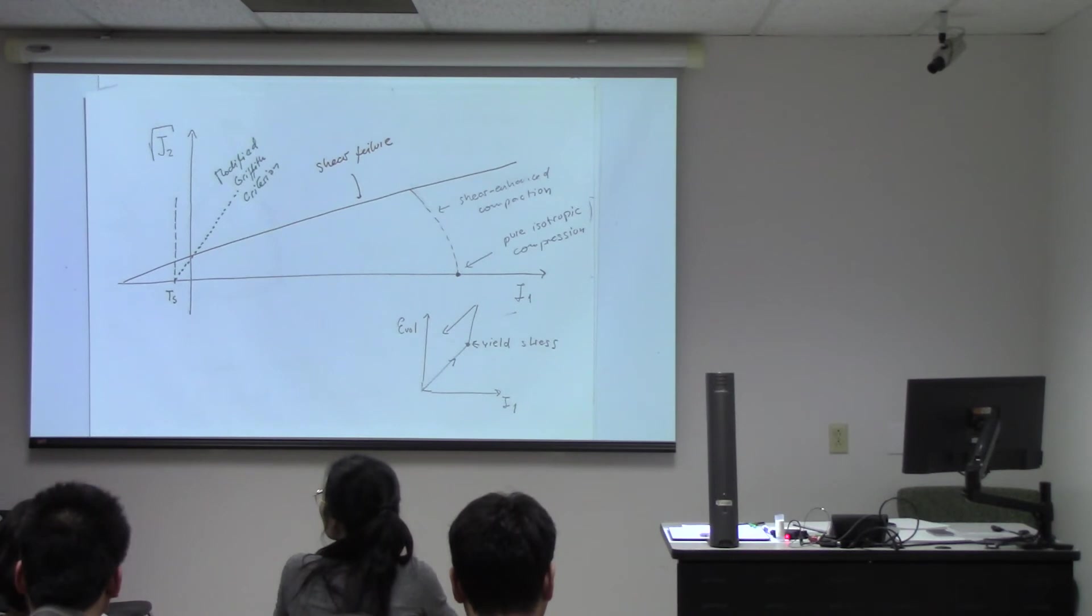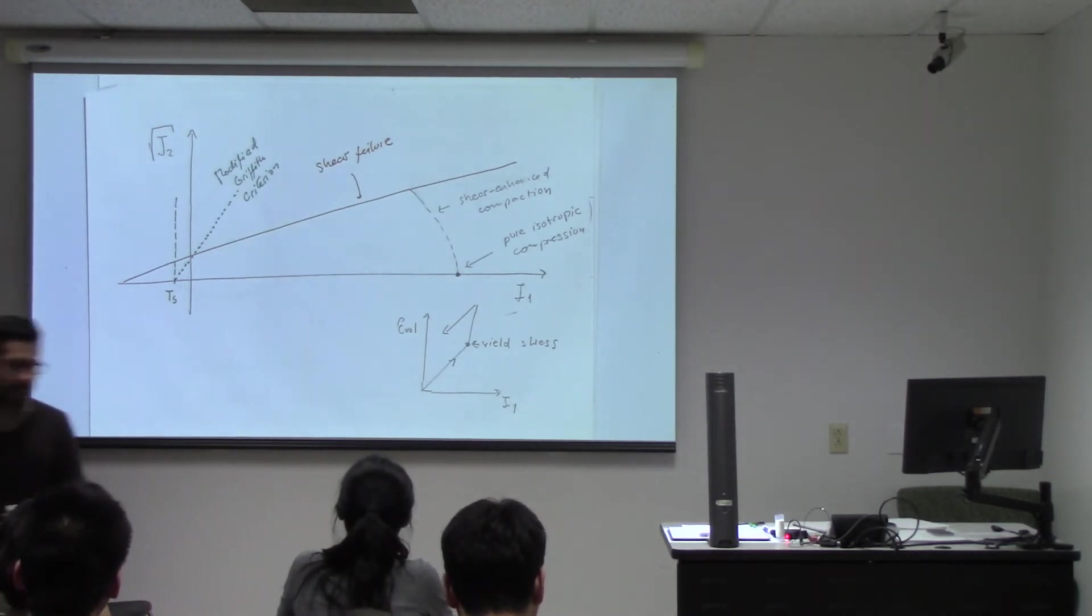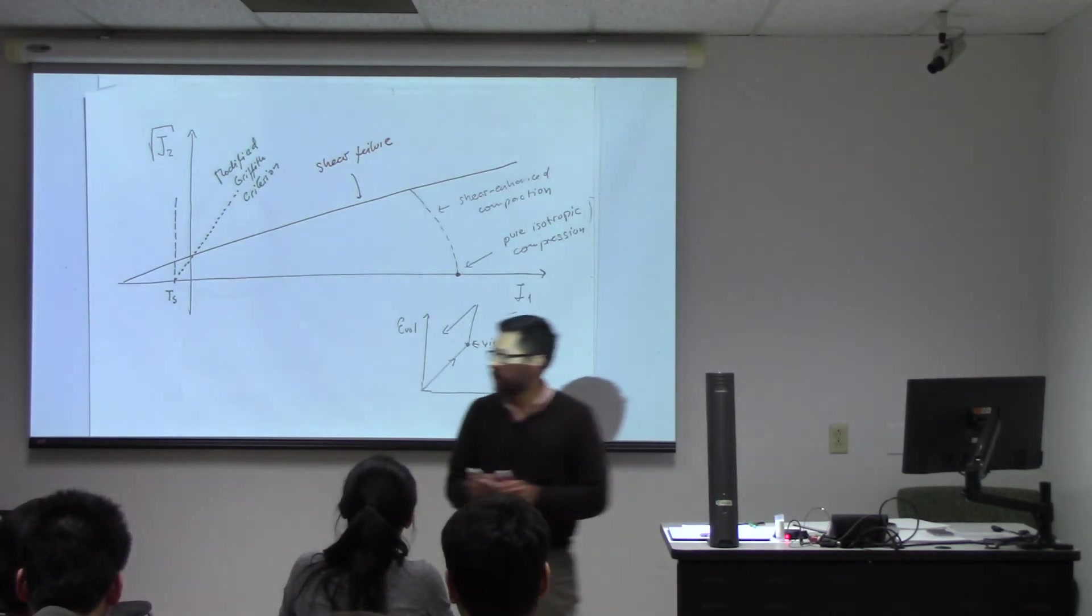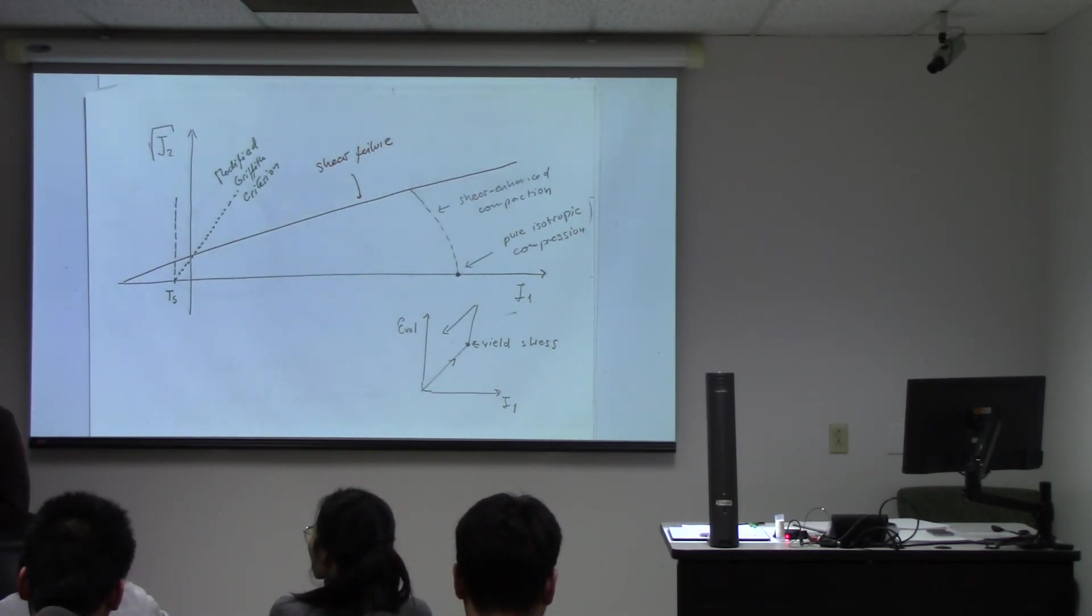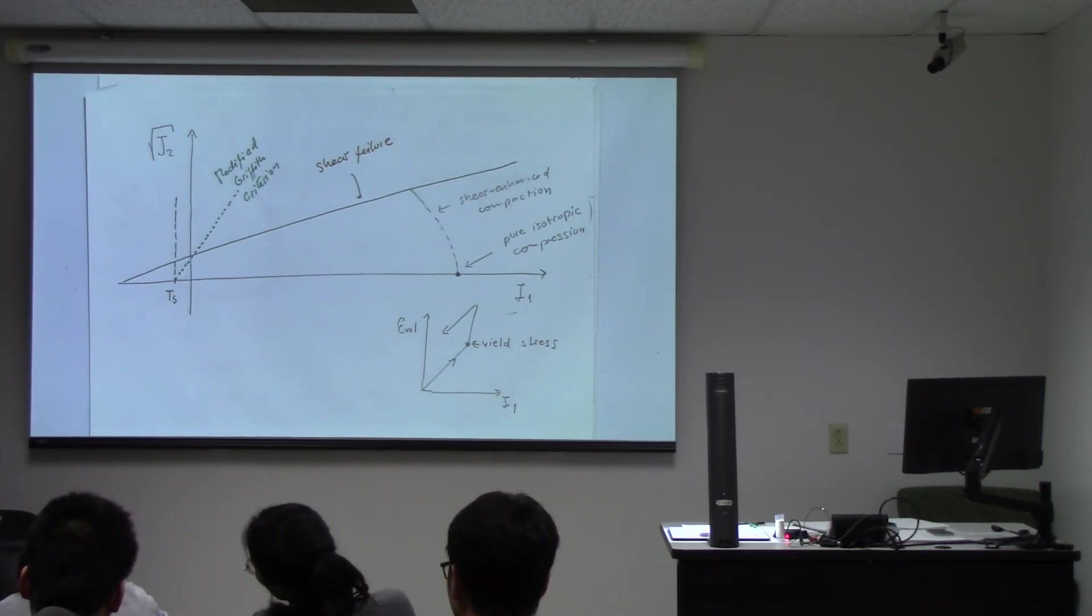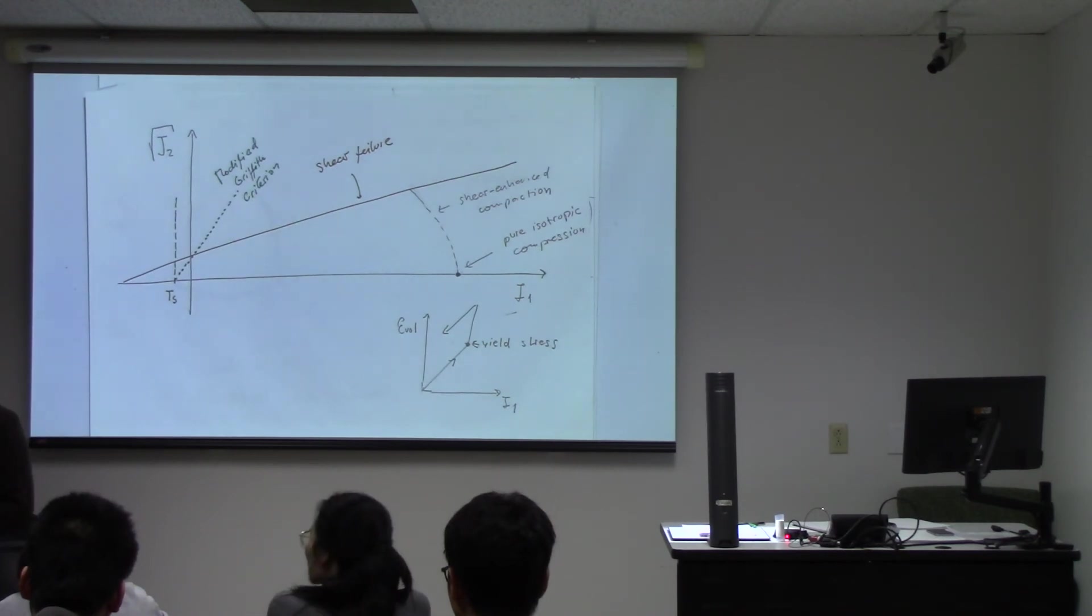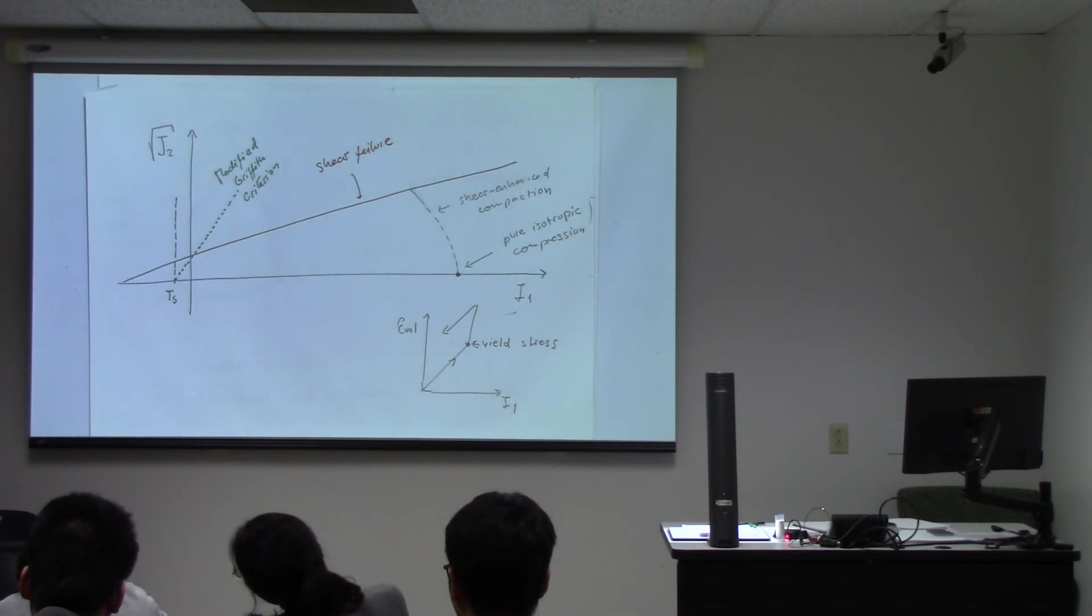Usually what I do is I calculate stresses at 360 points around the wellbore and check for every single point with an if condition if it's beyond the failure limit or not. If it tells me these points are beyond the failure limit, then the number of points beyond the failure limit divided by 2, if I have 360 points, that's going to give you the breakout angle.